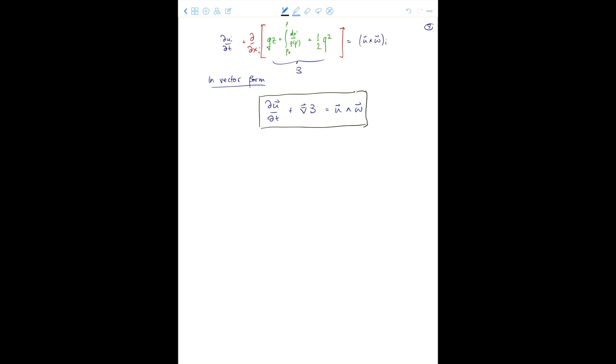So then we have du dt plus the gradient of the Bernoulli function is u cross omega. So, for example, let's consider now a steady flow. That means du dt is 0. So this term goes to 0. And we're just left with the gradient of b is u cross omega.